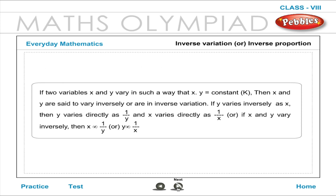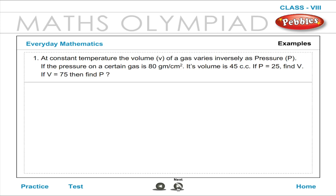Inverse Variation or Inverse Proportion: If two variables X and Y vary in such a way that X times Y is equal to constant K, then X and Y are said to vary inversely or are in inverse variation. If Y varies inversely as X, then Y varies directly as 1 by X, and X varies directly as 1 by Y. This is denoted by X is proportional to 1 by Y.